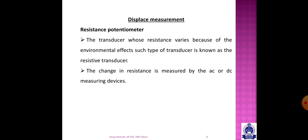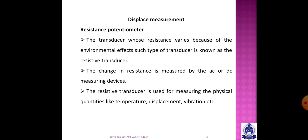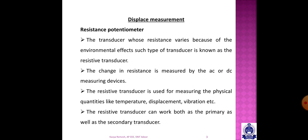The physical quantities in the environment include temperature, displacement, and vibrations. We discuss primary and secondary transducers from the first module. Primary and secondary transducers work in this resistance potentiometer context — for example, sliding resistive transducers.